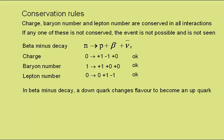In beta-minus decay, a down quark changes flavour to become an up quark. So we go from down, down, up of the neutron to up, up, down of the proton. This is a weak interaction involving the weak force.